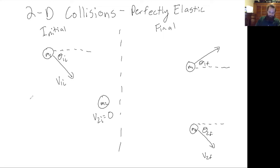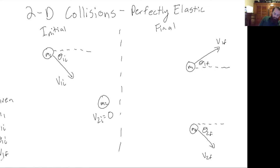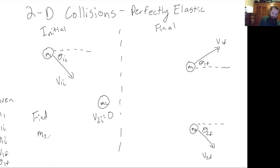Mass m2 is moving at some velocity v2 final at angle theta 2 final below the horizontal. We are given m1, v1 initial, theta 1 initial, v1 final, and theta 1 final — basically all the information about mass 1 and its velocity but no information about mass 2. So we want to find m2, theta 2 final, and v2 final — three unknowns to solve for.